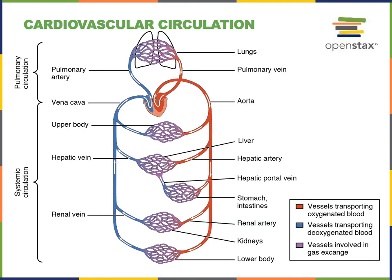The heart functions as a pump, driving blood flow through the blood vessels. As the heart beats with each contraction, the blood forced into the arteries causes an increase in blood pressure inside the arteries. Blood then flows from an area of high pressure to low pressure, from the elastic arteries into muscular arteries, then into arterioles and capillaries.